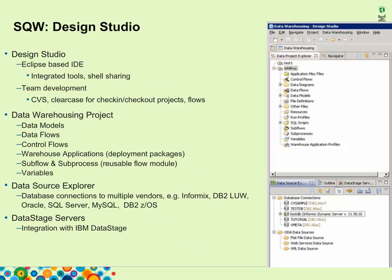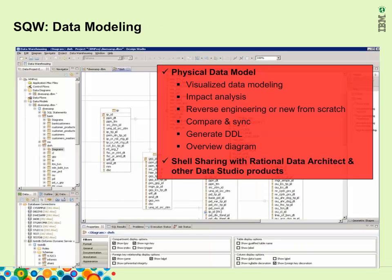SqW also works with IBM DataStage. You can create DataStage servers inside the DataStage server view. An example of a physical data model using the Visualize modeling tool — right-click on an object to show impact analysis. The model can be generated from scratch or reverse engineered from a database. For example, you can first reverse engineer from a database and then refine the model — add a table, add FK constraints, etc. — and then push the changes back to the database.